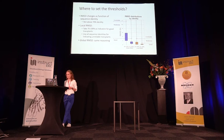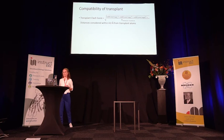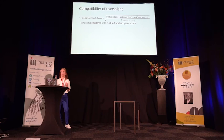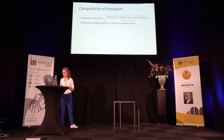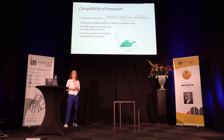Besides those two metrics, we also calculate a clash score for each transplant. This clash score is calculated by taking the square root of the sum of squares of overlaps, divided by all distances considered, with every atom within four angstroms of the transplant included. When we compare this clash score with the validation results, we observe a correlation, indicating we can use this clash score as a proxy for transplant compatibility and quality. We are currently looking into how to implement this in AlphaFill.